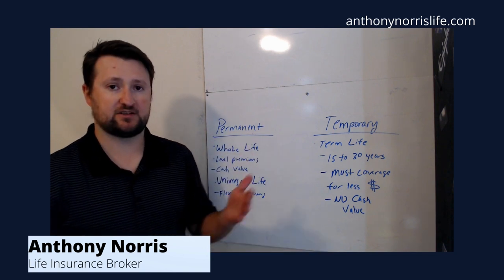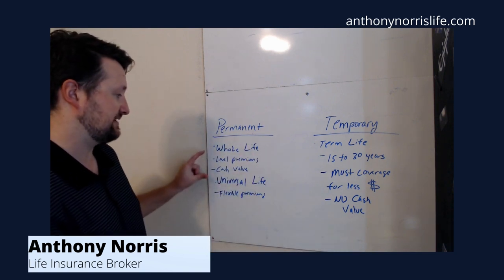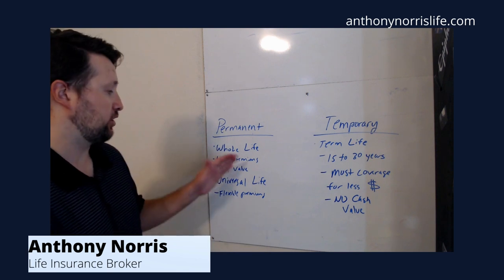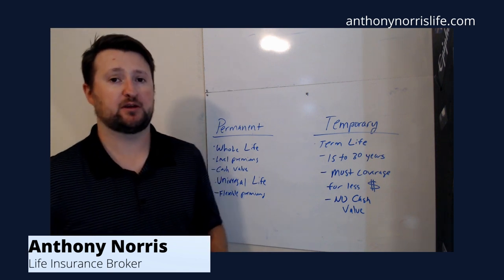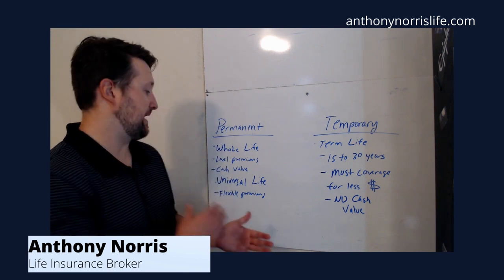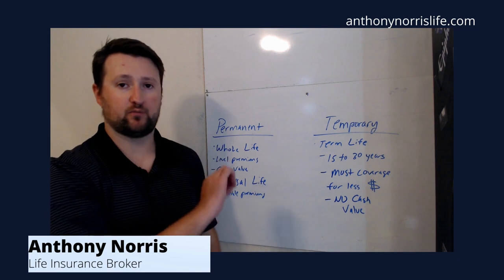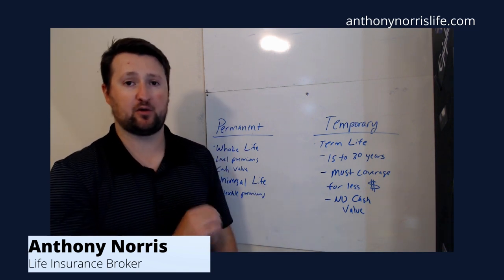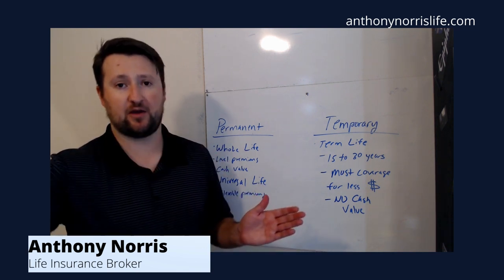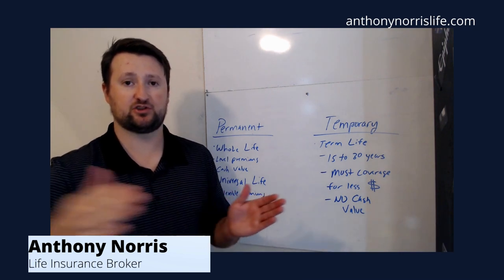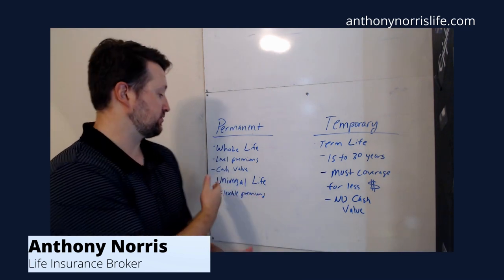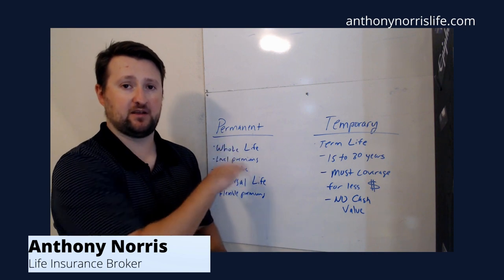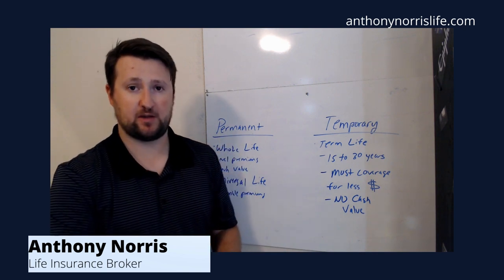Permanent insurance is exactly what it sounds like — it's permanent. It has two main types: whole life and universal life insurance. Whole life insurance has level premiums, so the premium you pay on day one is what you pay until you die, as long as you keep paying. The coverage remains in force for your whole life — that's the permanent aspect of it.